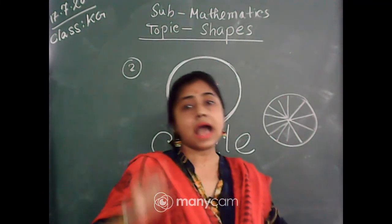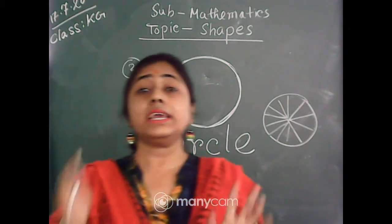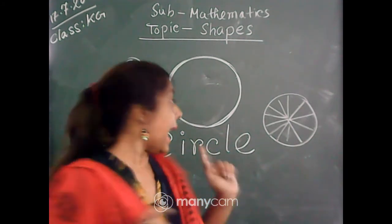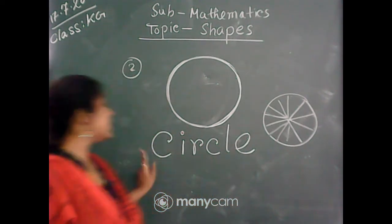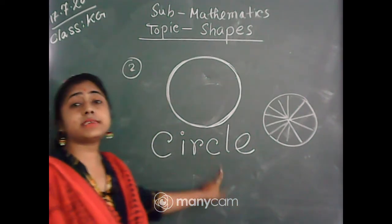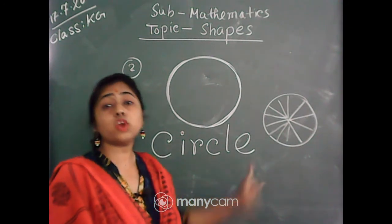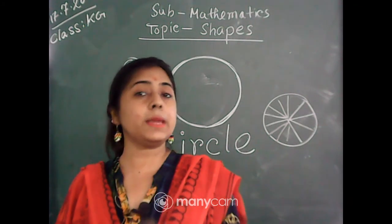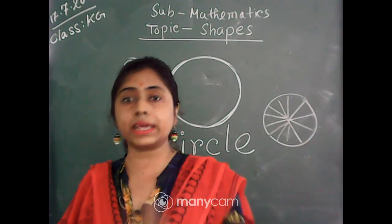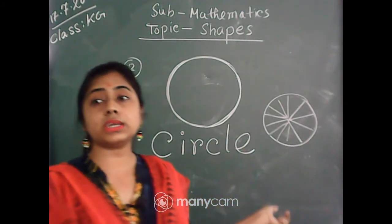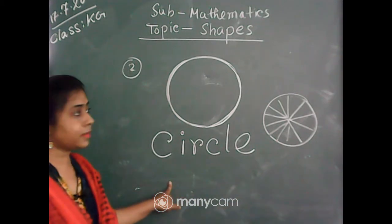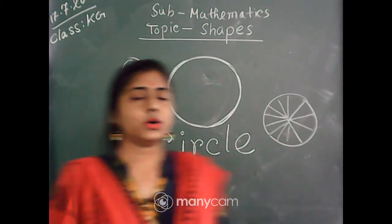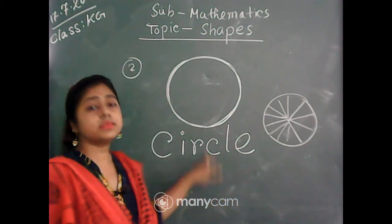So our second shape is circle, and I will show you this circle. Can you see this circle? Look, it has a round face. So it is circle. I would request that you draw it on your own, and the spelling is very important: C-I-R-C-L-E. The shapes we have learnt today — the spelling is very important. First one is triangle, and the next one is circle.